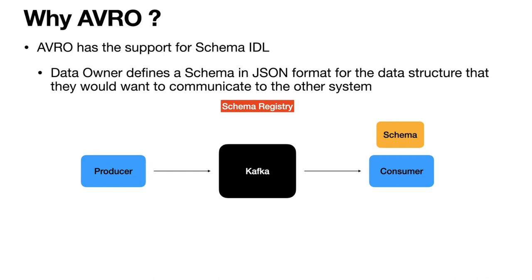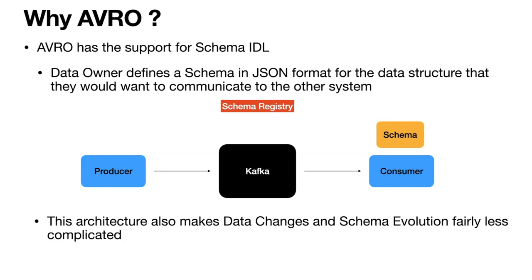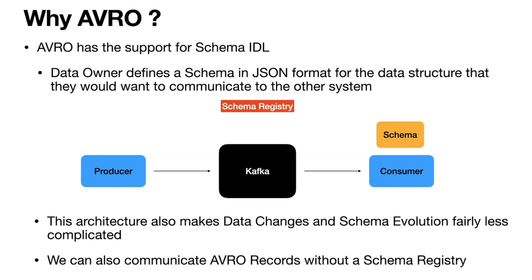With this architecture, the producer will always make sure it produces the fixed data structure based on the schema, because if the schema doesn't match, the producer will not be able to publish that record into the Kafka topic. This architecture also makes data evolution and schema changes fairly less complicated. We can also publish and consume Avro records without the schema registry, which I'll show you in the coding section.